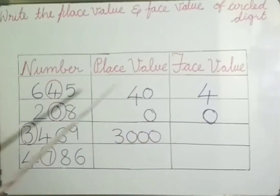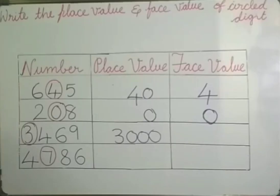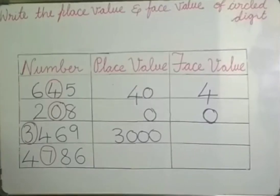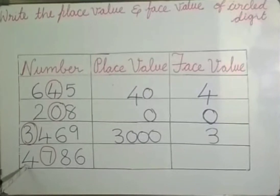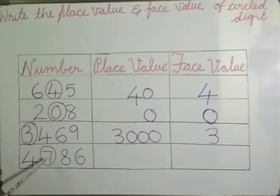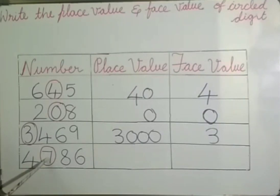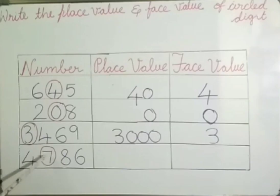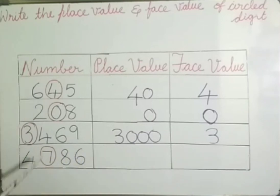The face value of 3 is 3. Now, for the number 4786, we have to find the place value and face value of 7. 7 is at the 100's place — 7 × 100 = 700. So the place value of 7 is 700 and the face value of 7 is 7.